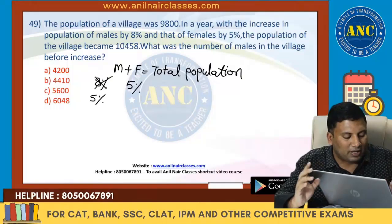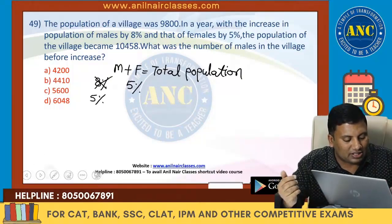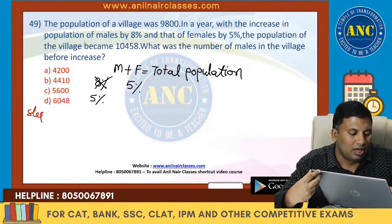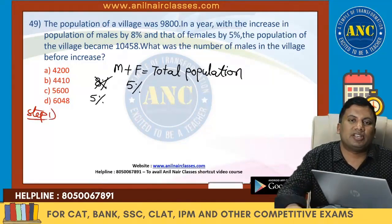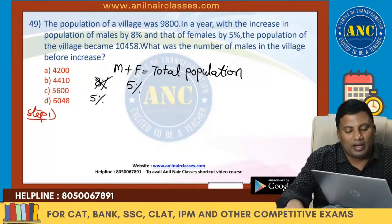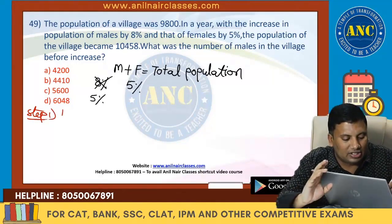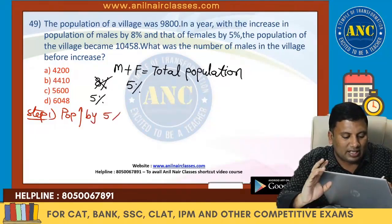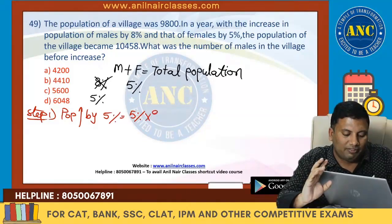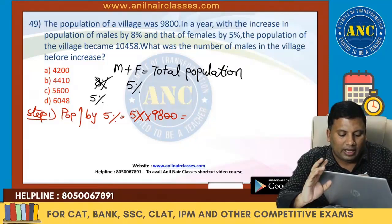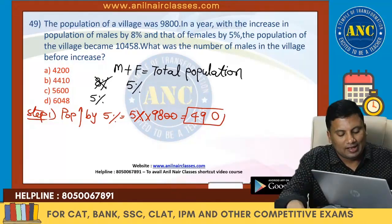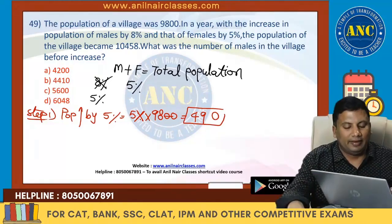5% of 9,800 divided by 100 gives population increasing by 490. So if both increase by 5%, population increases by 490. Step 2: But actually in the question, the final population is 10,458. Initial value is 9,800. The difference: 9,800 + 200 = 10,000, then 10,458 − 10,000 = 458, so total increase is 658.